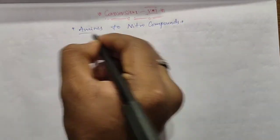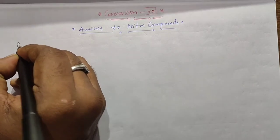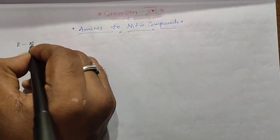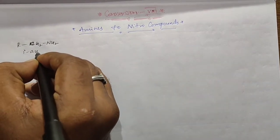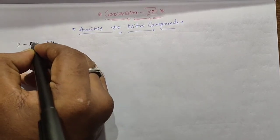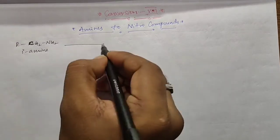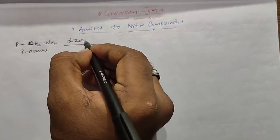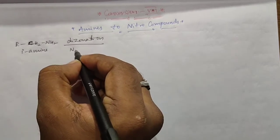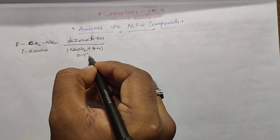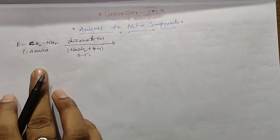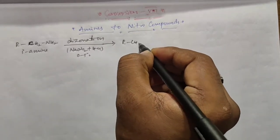We start with a primary amine, CH2NH2. This primary amine undergoes diazotization with NaNO2 plus HCl at 0 to 5 degrees centigrade. In the first step, the primary amine is converted into the diazonium salt.